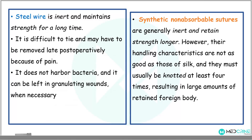Steel wires are inert and maintain strength for a long time. They are difficult to tie and have to be removed postoperatively because of pain. Steel wire does not harbor bacteria and can be left in granulating wounds when necessary. Other synthetic non-absorbable sutures are generally inert and retain strength longer; however, their handling characteristics are not as good as those of silk, and they must usually be knotted at least four to six times, resulting in large amounts of retained foreign material in the body.